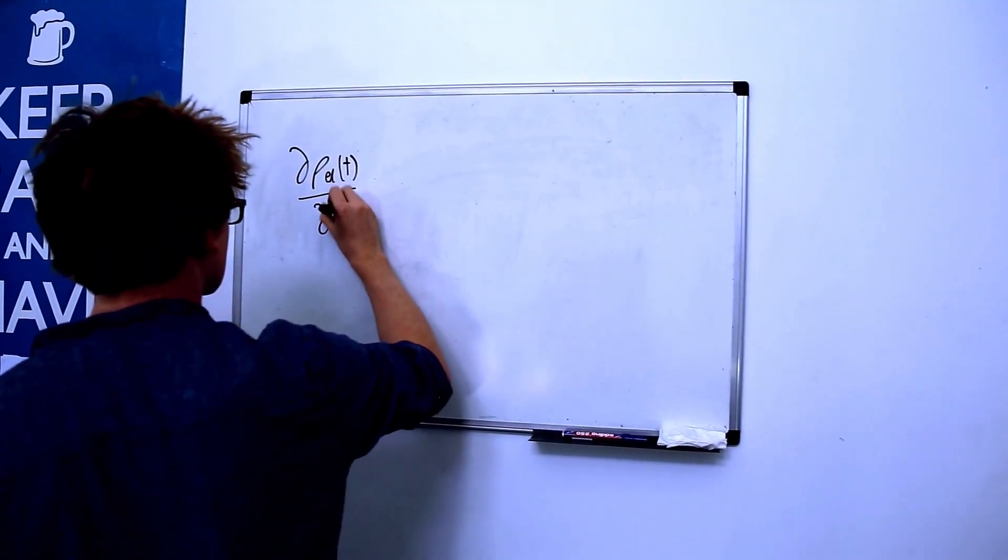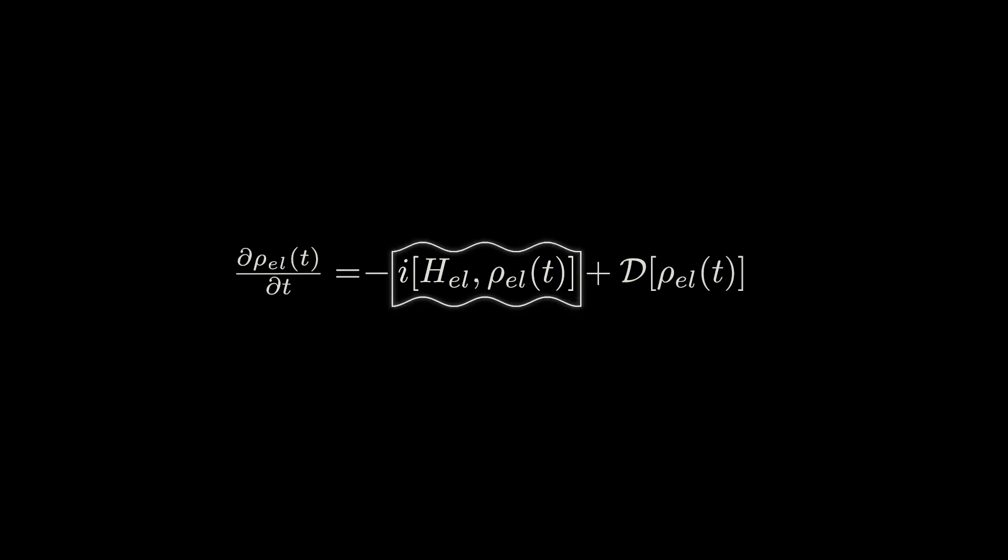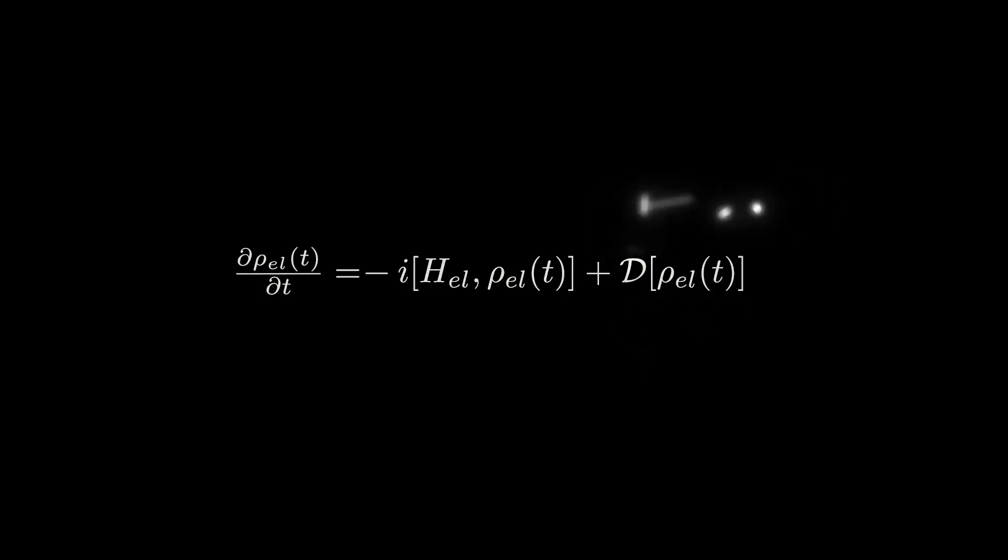Coherent vibrational motions keep chlorophyll synchronized as energy is redistributed around the antennae. But in contrast, noisy vibrational motions make energy transfer totally random. Neither of these two processes alone are ideal, so we need a combination of both of these for efficient energy transfer.